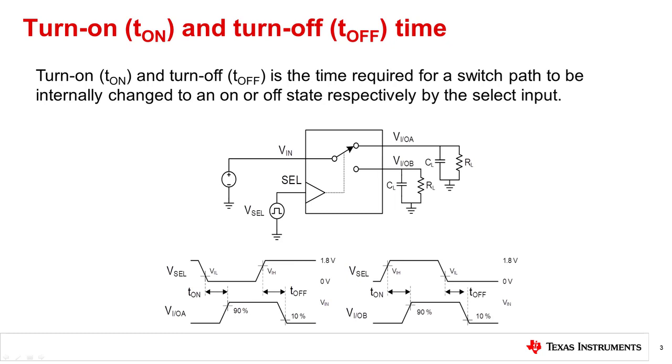Similarly, T-OFF is the time required for the switch path to be charged to the OFF state. T-OFF is measured from the time the select line reaches the logic low or high threshold to the time the VIO reaches 10% of its high state voltage. These timing characteristics determine how fast you can switch to different inputs, which is important for applications which need to cycle through inputs quickly, such as sample and hold applications and protection systems.